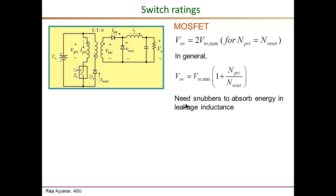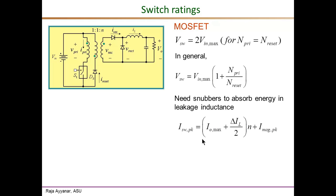Assuming provisions have been made for snubber circuits to handle voltage spikes, the current rating for the MOSFET is the same as the primary winding current, which is predominantly n times the inductor current — mostly I_o with a small ripple. There is also a small magnetizing current component, and the sum of these two peak values gives the peak switch current rating.